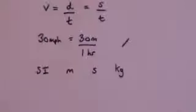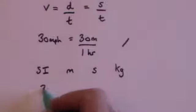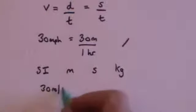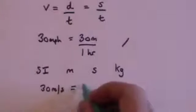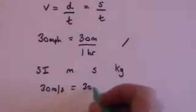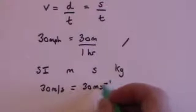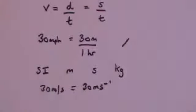So in fact we shouldn't be talking about miles per hour or even kilometres per hour — we should be talking about metres per second. You will always talk about something like 30 metres per second, which is the same as 30 metres per second to the minus one. You can have it either way; both are one and the same thing.